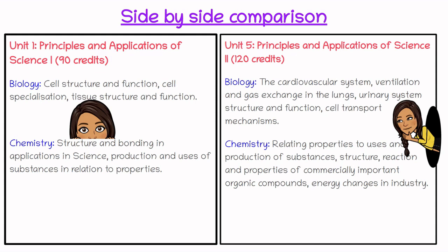In Unit 5 chemistry you learn more about the properties and uses of substances, including chemical properties, the use of those substances, and how certain substances may be purified and extracted. You also look at organic compounds and their structural representations, their bond angles, and alkanes and alkenes.